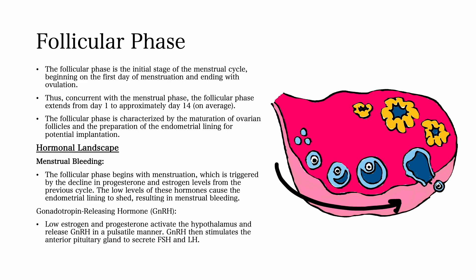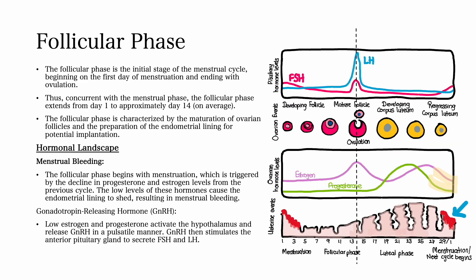Let's consider the hormonal landscape during the follicular phase. The follicular phase begins with menstruation, which is triggered by a decline in progesterone and estrogen levels from the previous cycle. The low levels of these hormones cause the endometrial lining to shed, resulting in menstrual bleeding.